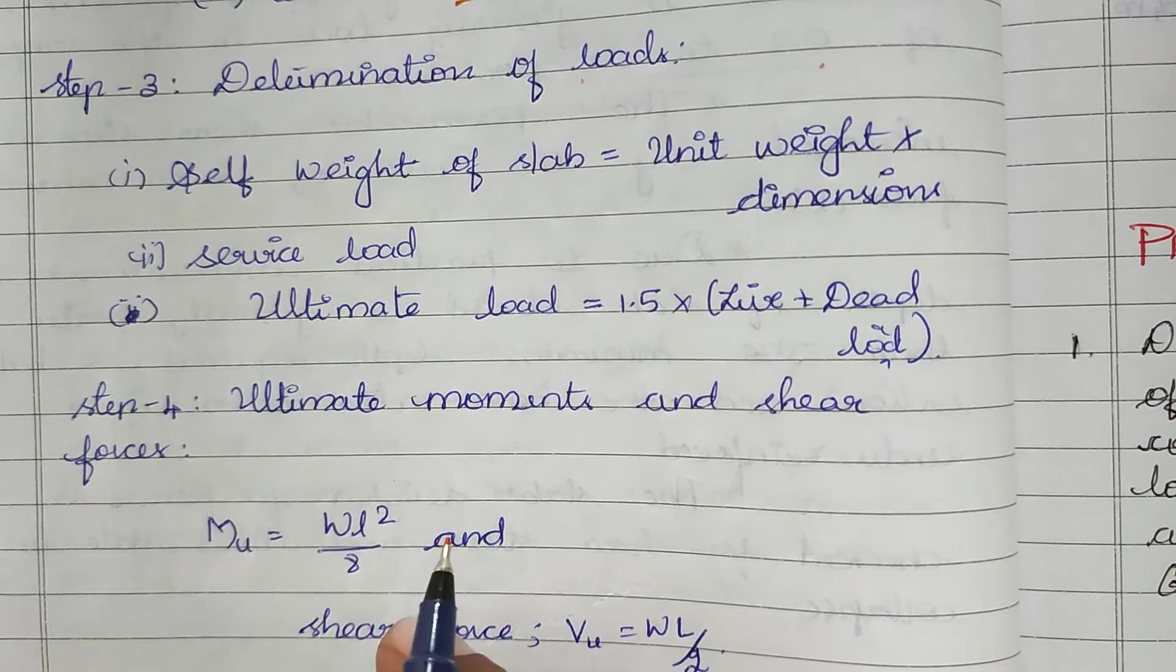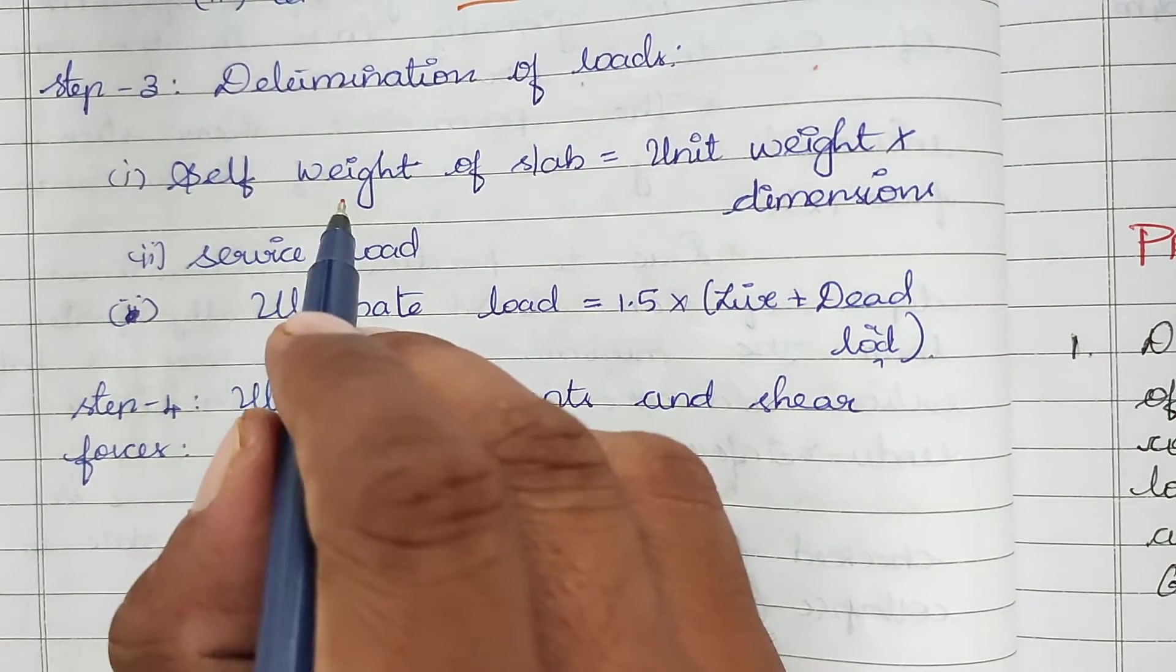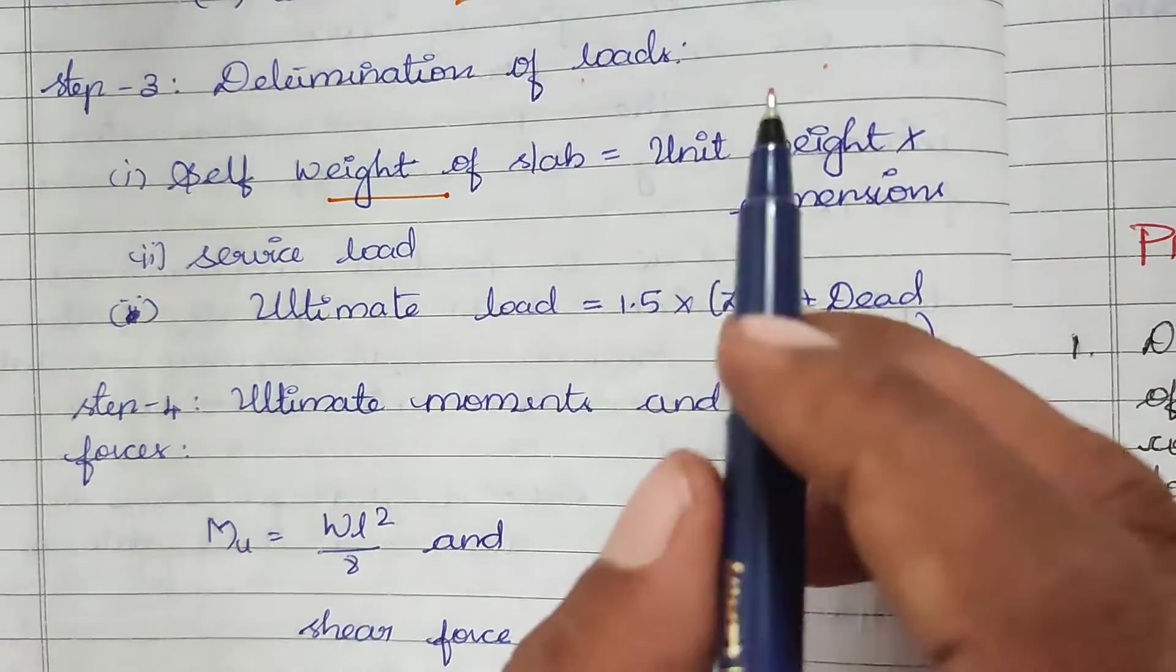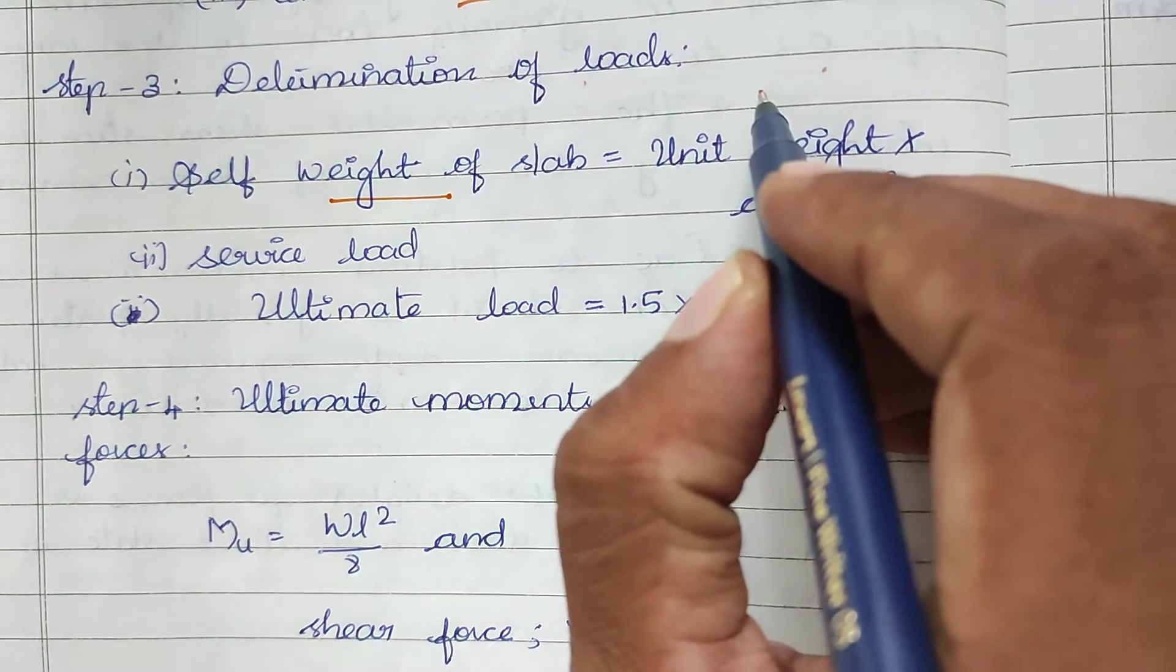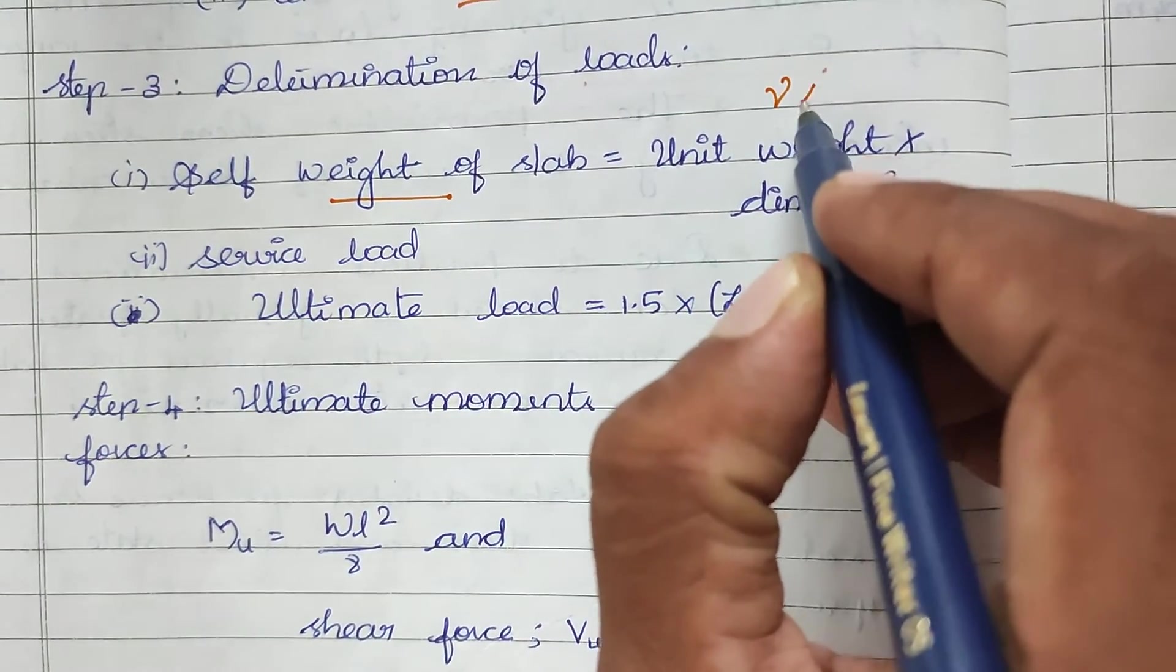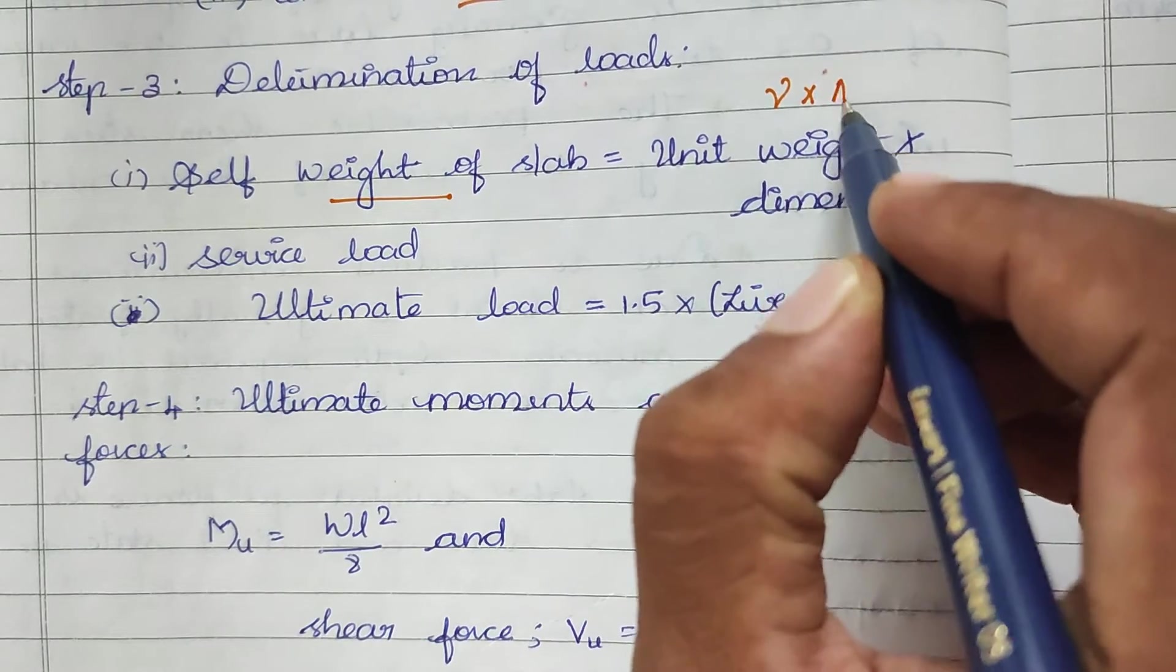First is self weight of the slab. We have to find out unit weight times dimensions, because unit weight is gamma times dimension in area.